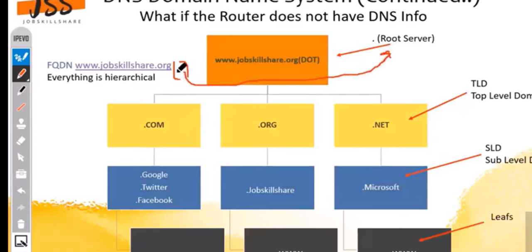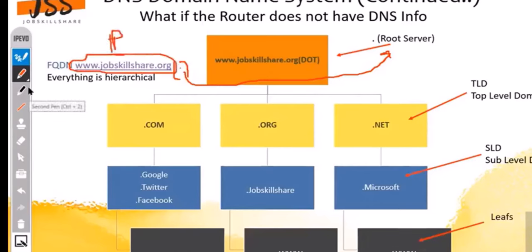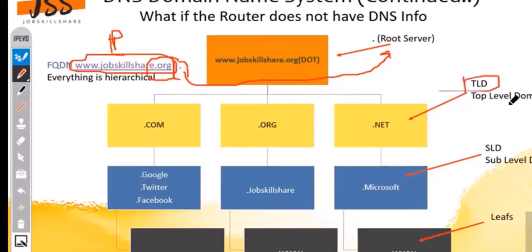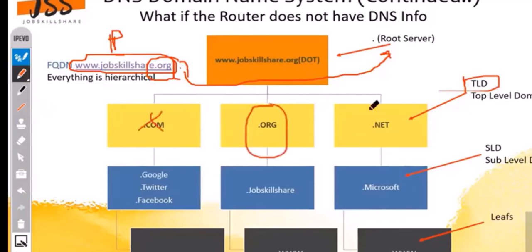...that invisible dot is basically pointing to the root server. We send our request to the root server looking for the IP for this domain. The root server is intelligent enough to check the last portion of your URL and send it to the TLD — the Top Level Domain server. In the case of jobskillshare.org, the top level domain is .org.